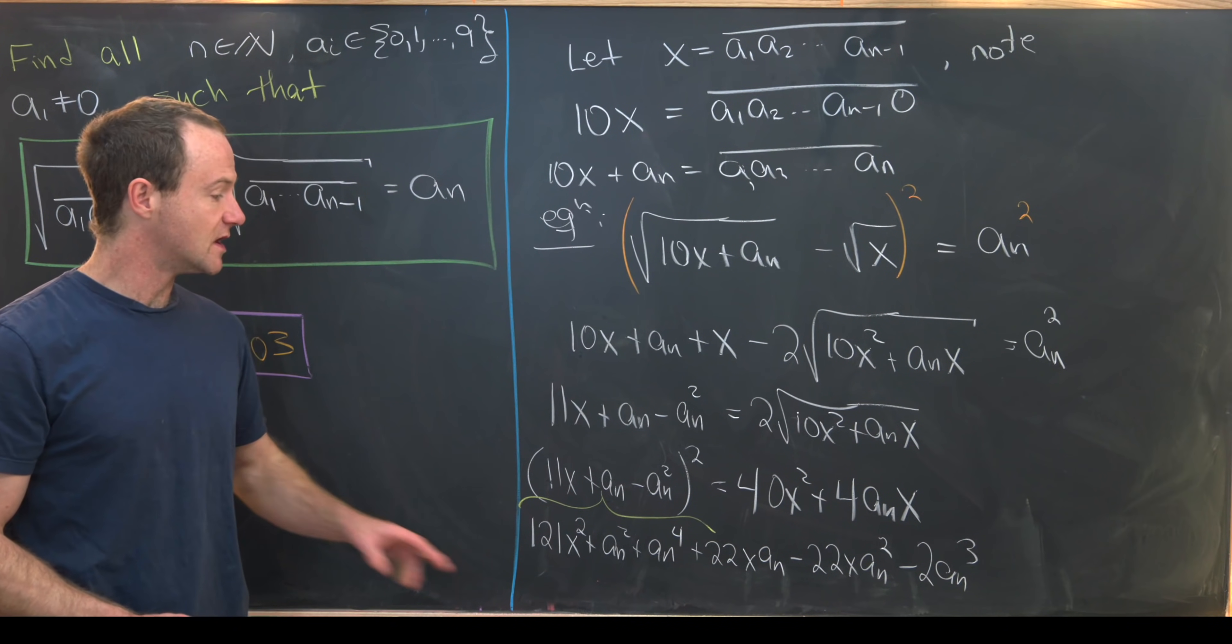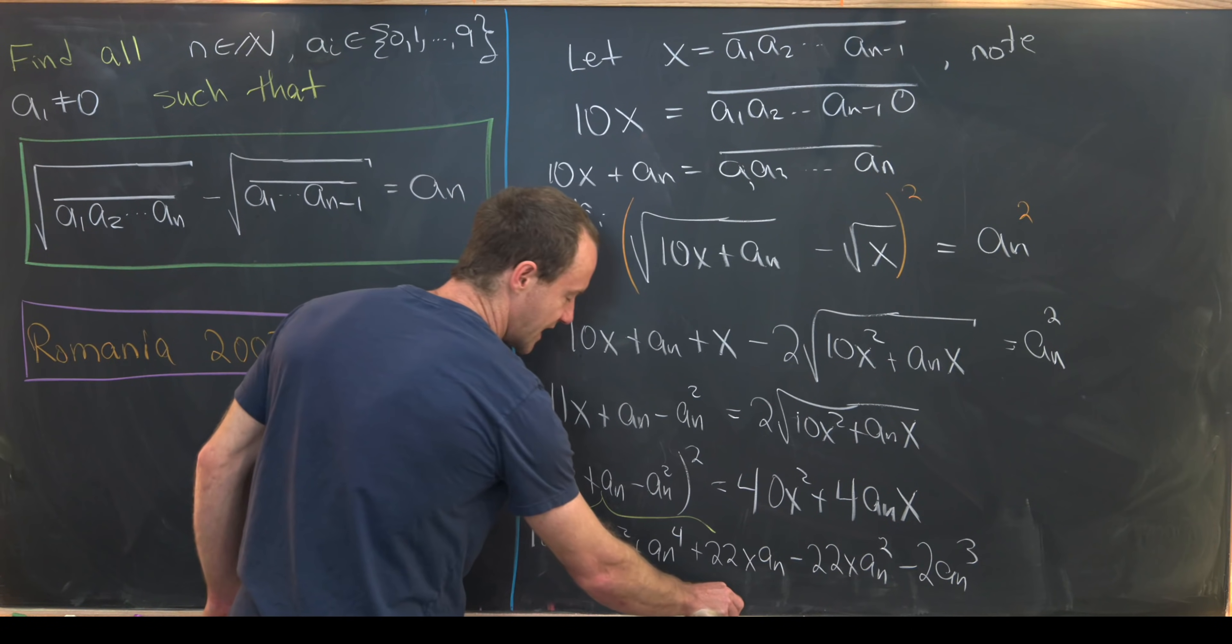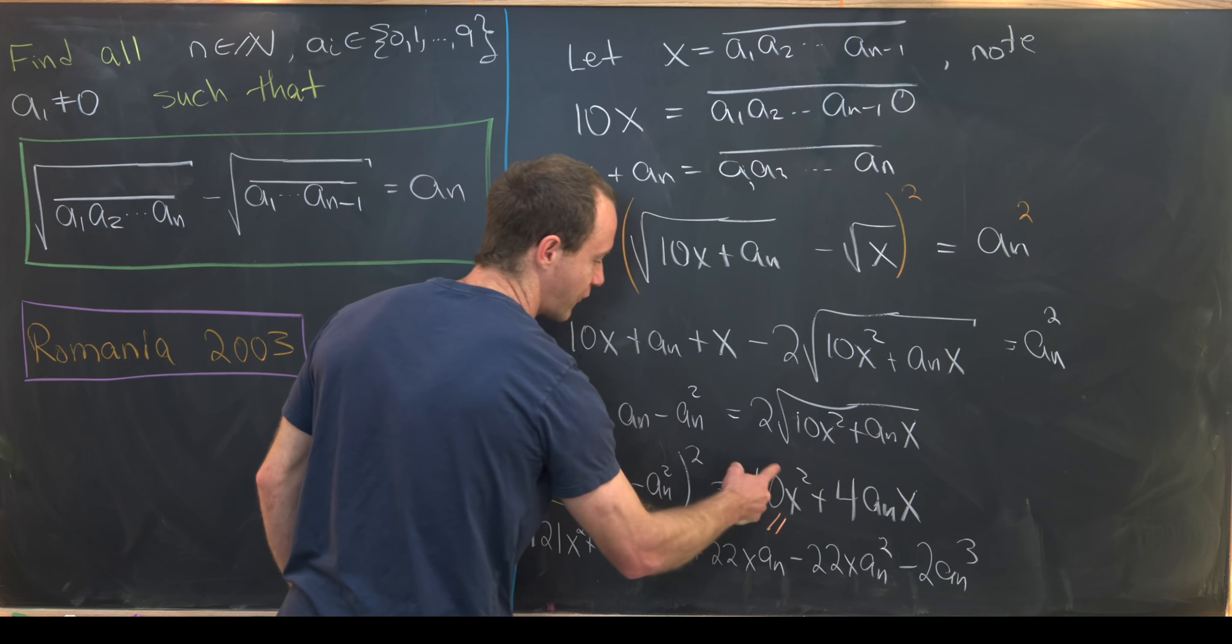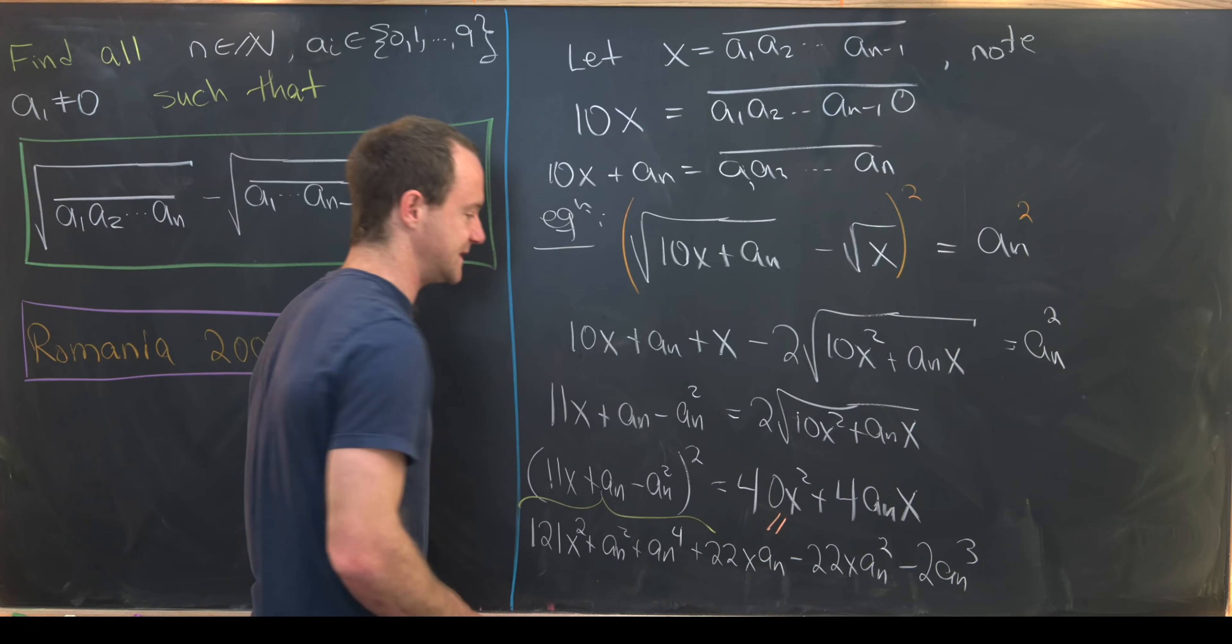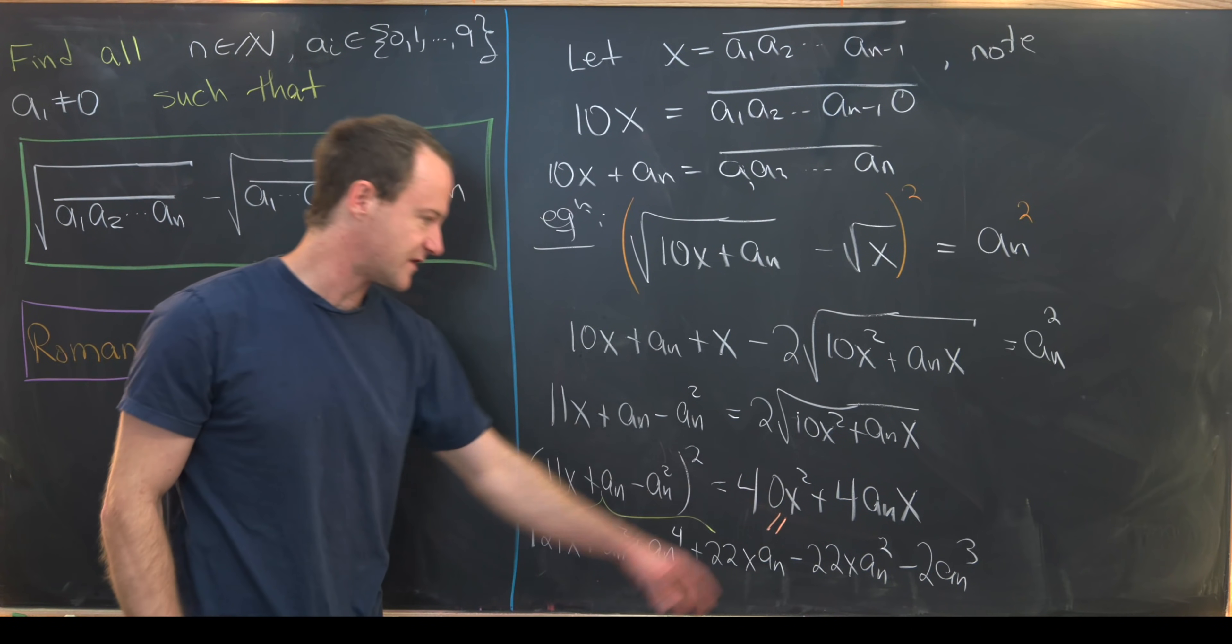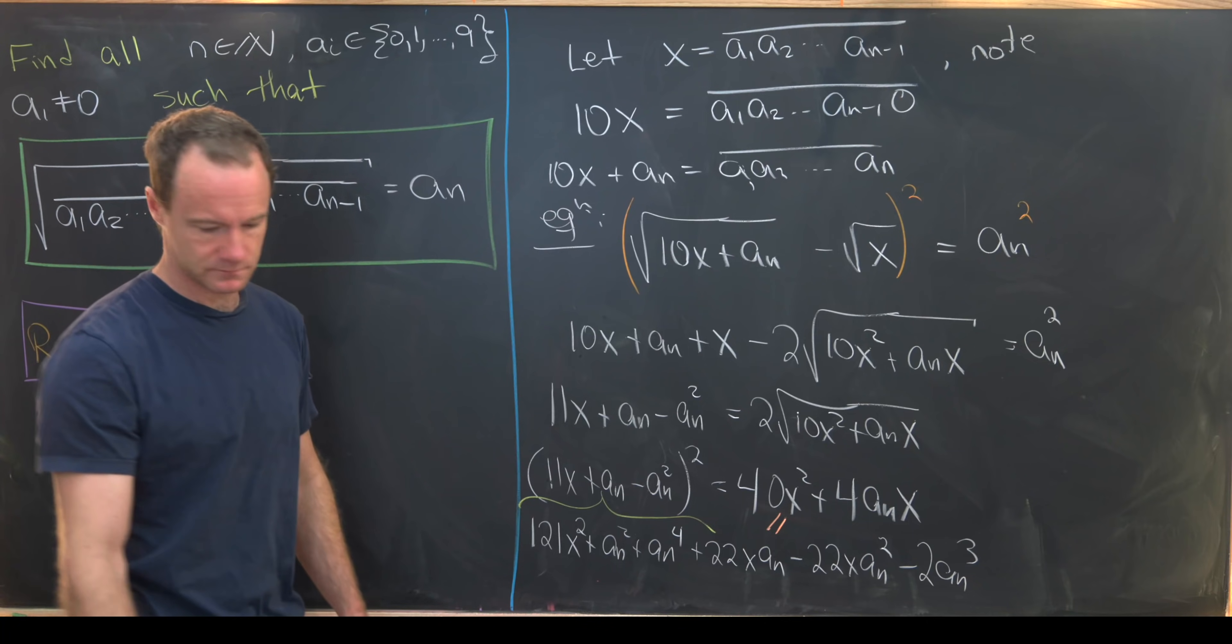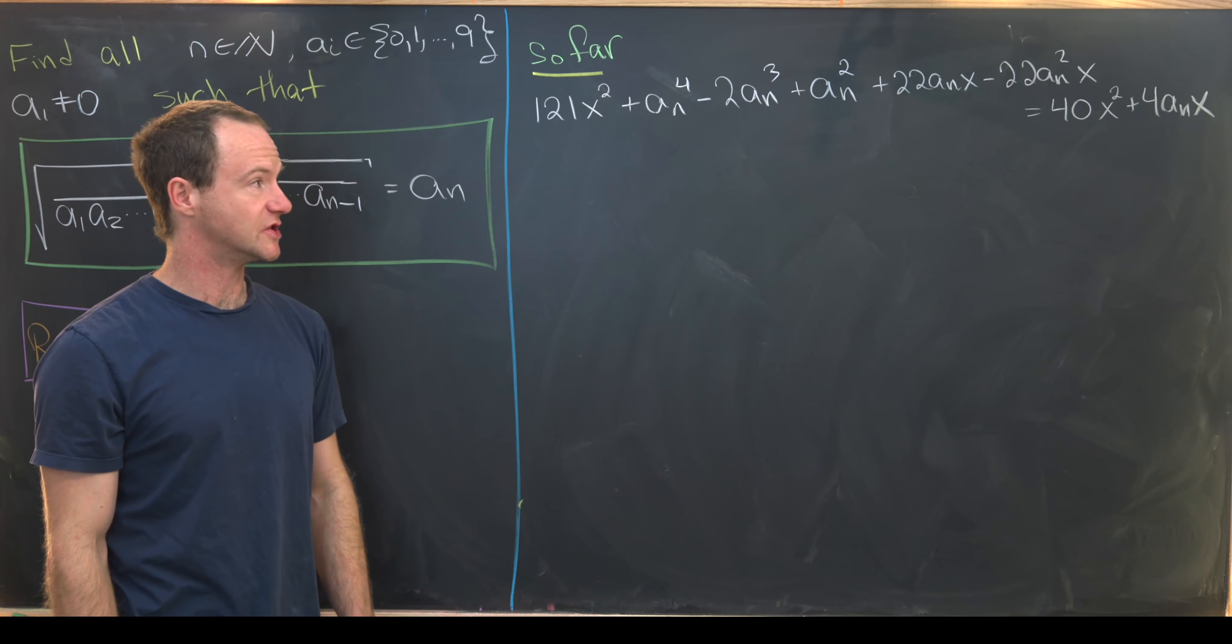Okay, so let's maybe move this new equation to the top of the board. This one that has 40x squared plus 4 times an x equals all of this, and then we'll finish it off.